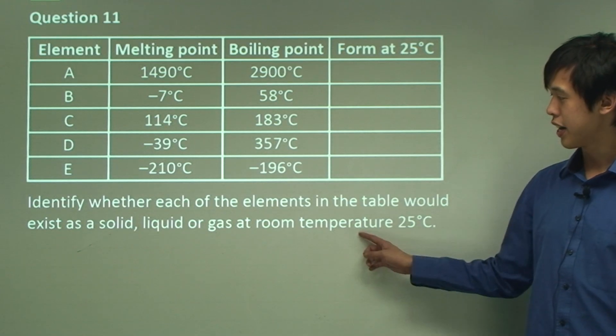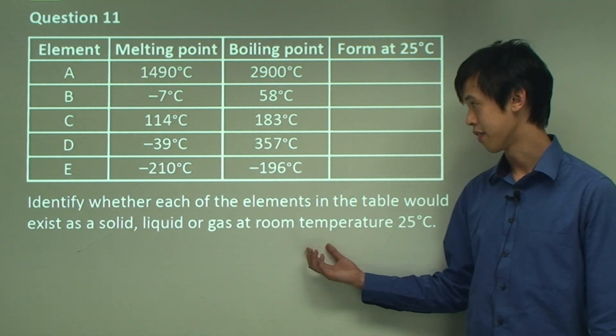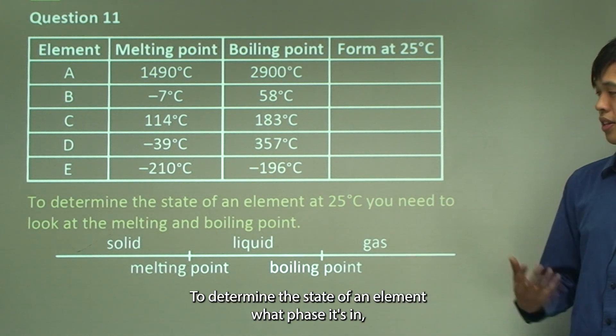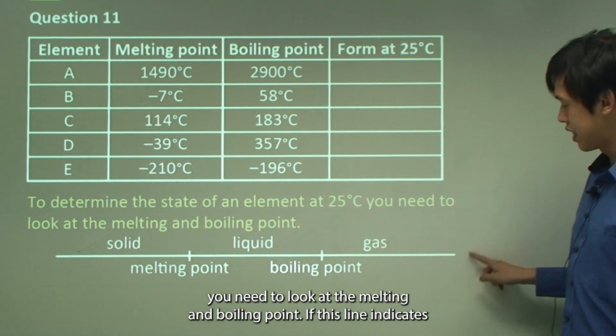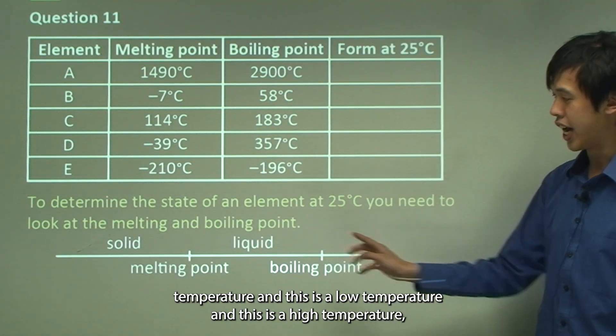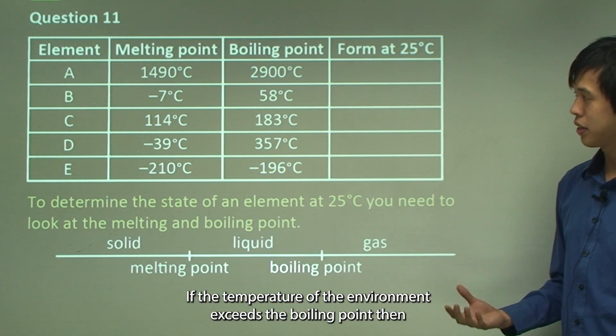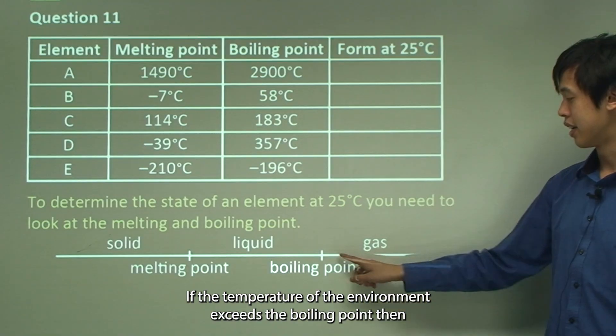Question 11: Identify whether each of the elements in the table would exist as a solid, liquid, or gas at room temperature. So room temperature is 25 degrees Celsius. To determine the state of an element, what phase it's in, you need to look at the melting and boiling point. If this line indicates temperature and this is a low temperature and this is a high temperature, if the temperature of the environment exceeds the boiling point, then that element will be a gas.